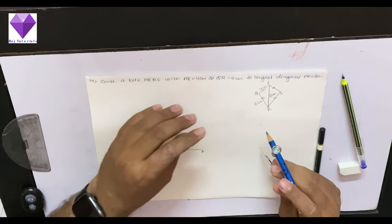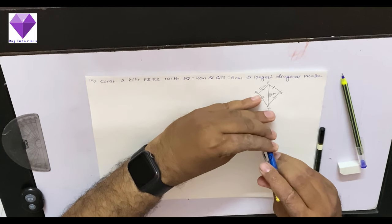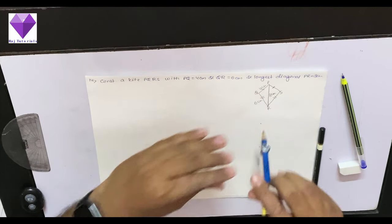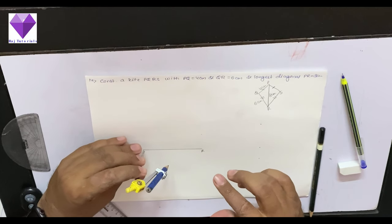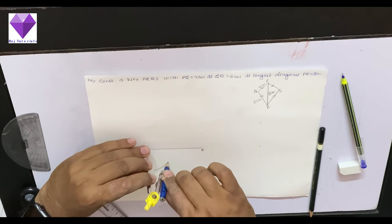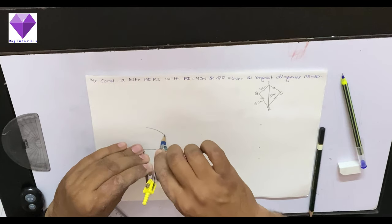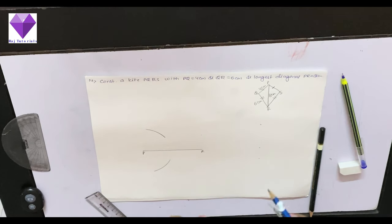So now first 4 cm arc, I will take with P as center on both the sides I will make one arc. Because on both the sides I will have the same side.